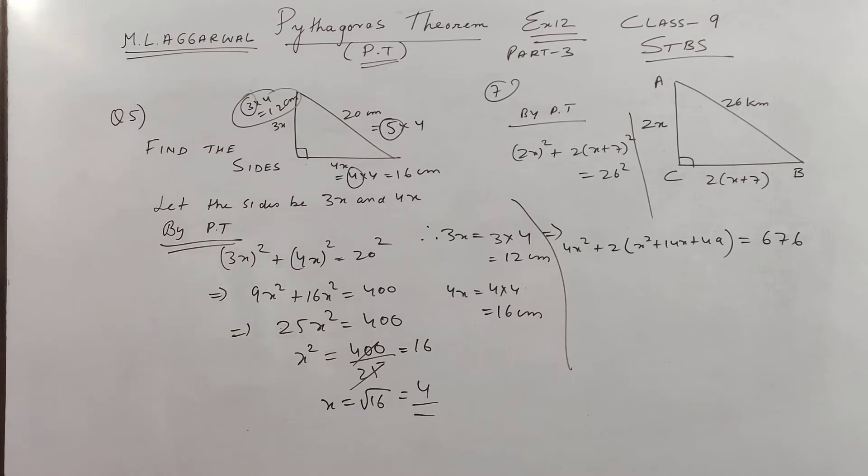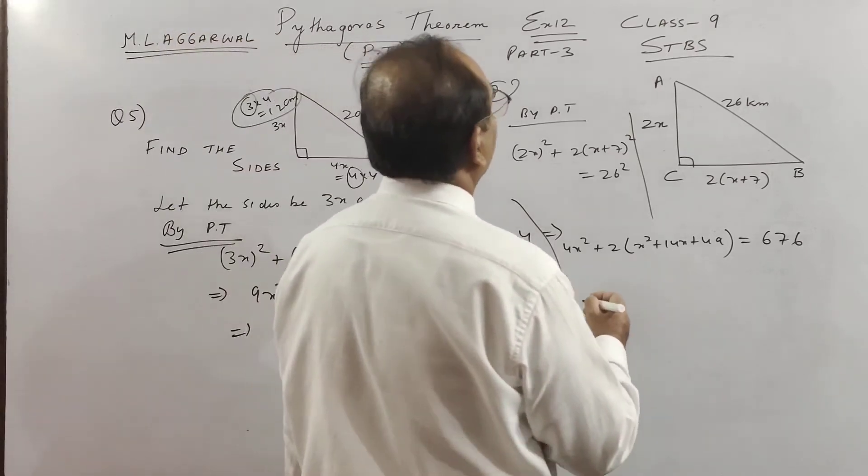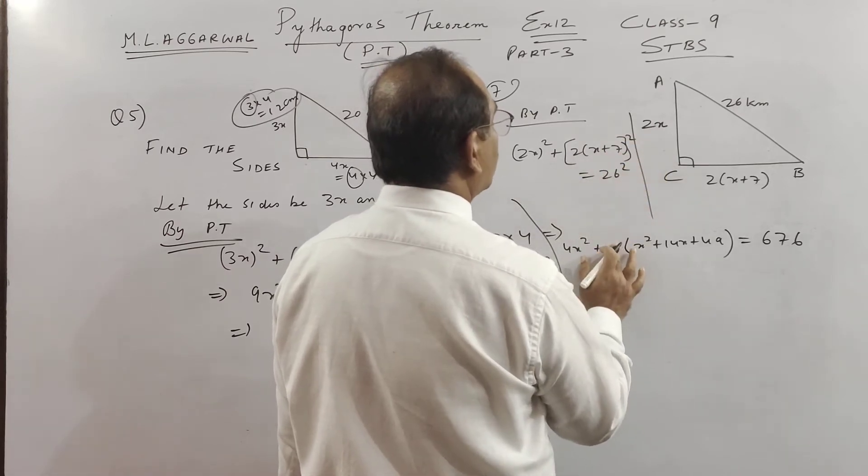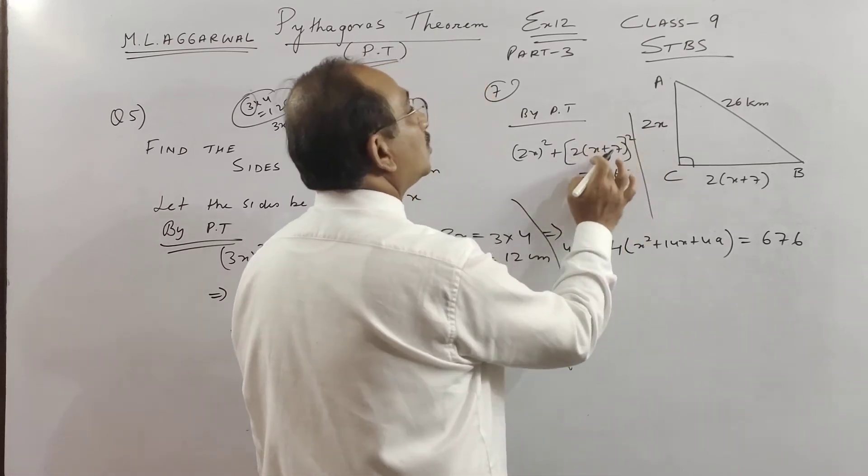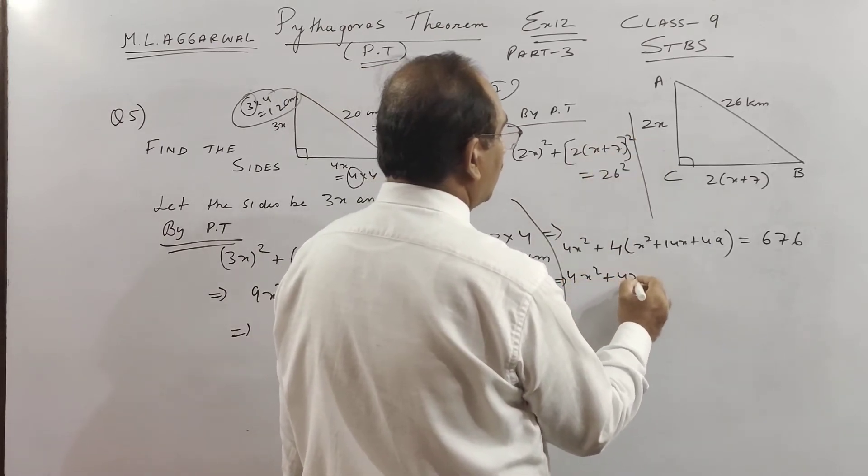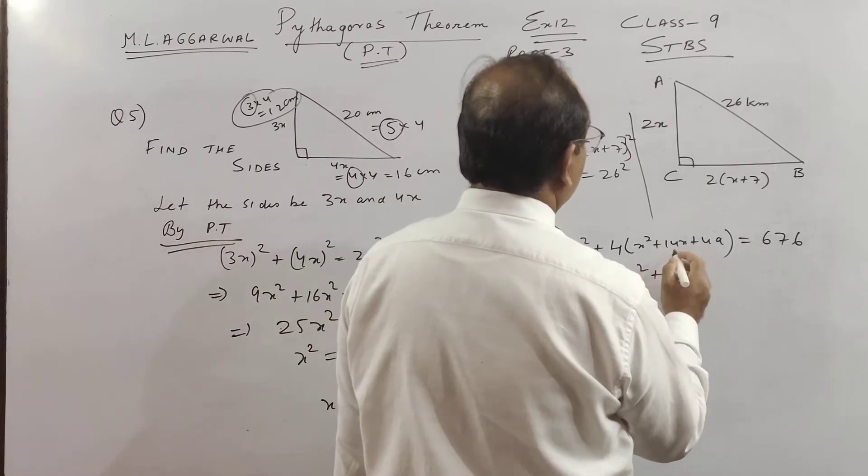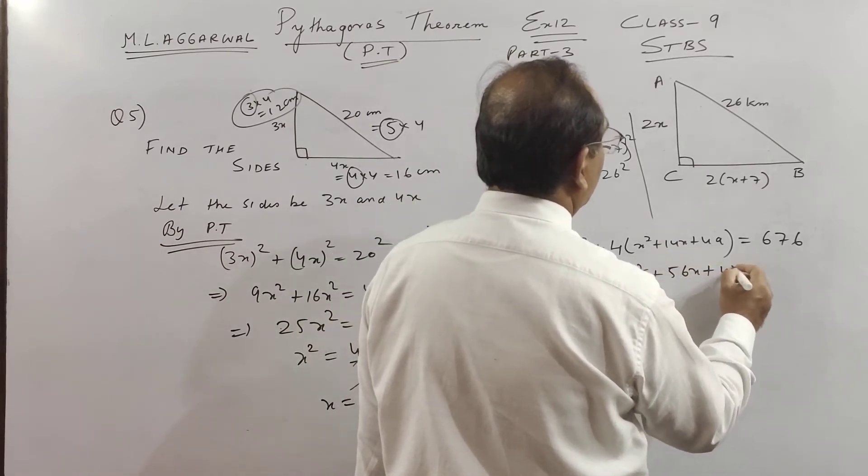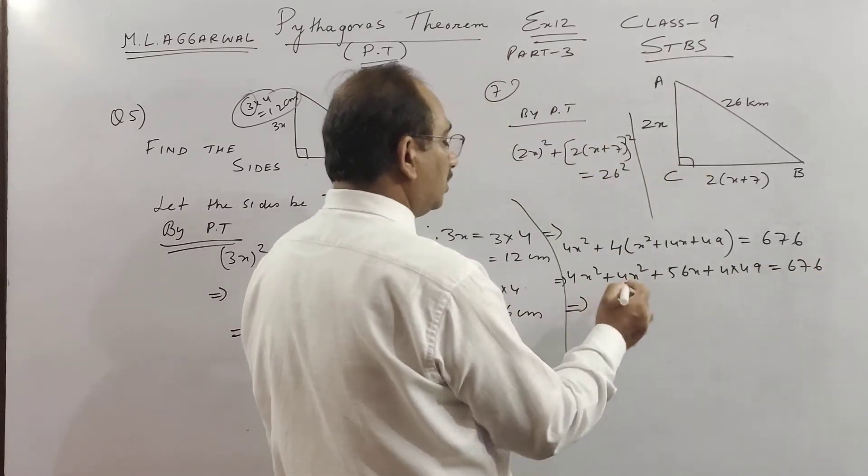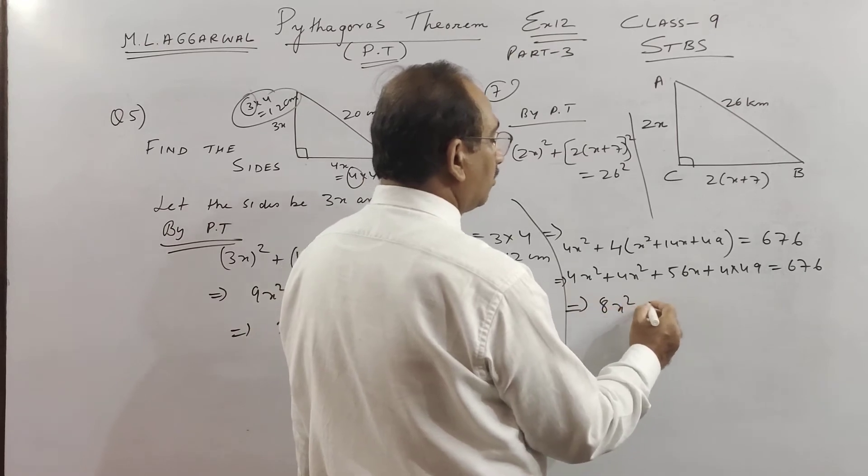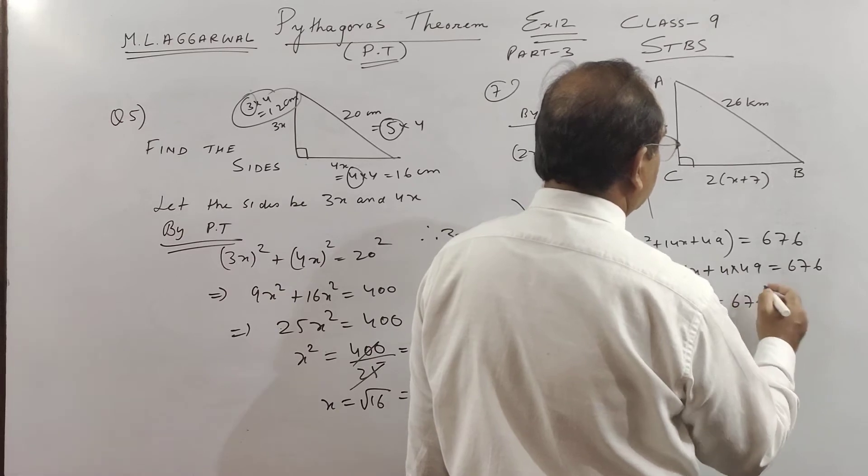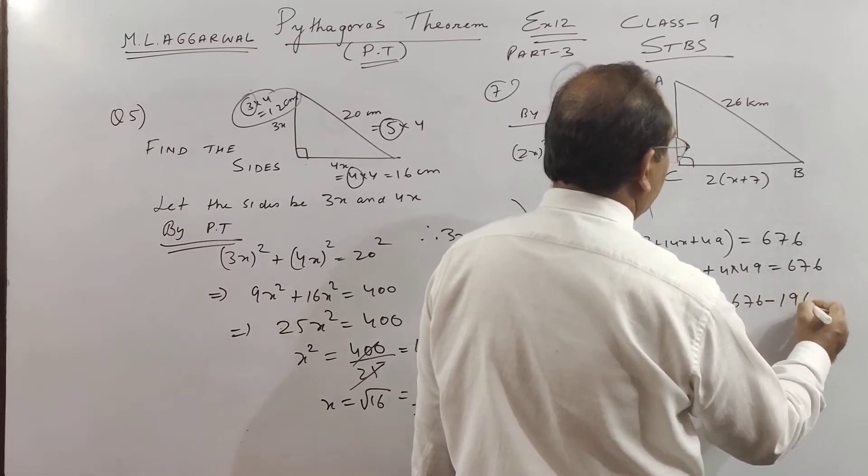So what do we get children here? Actually this whole thing square children, so this will also get square, 2 square and this square. So what do we get children, 4x square plus 4x square plus 56x plus 4 into 49 equal to 676, so this is coming to be a quadratic equation plus equal to 676 minus 196.